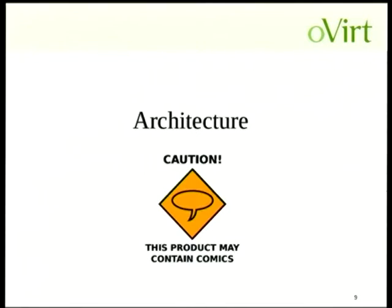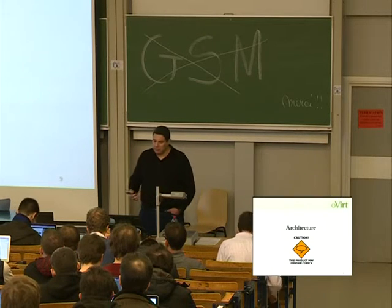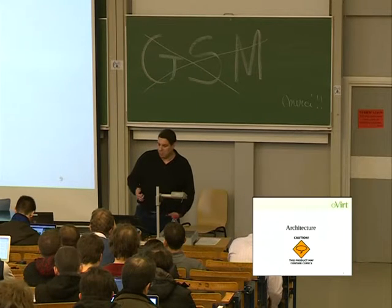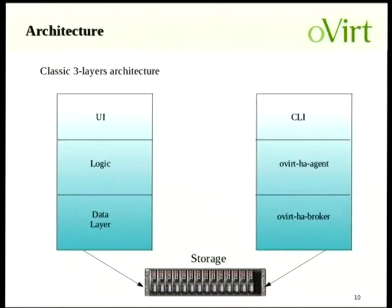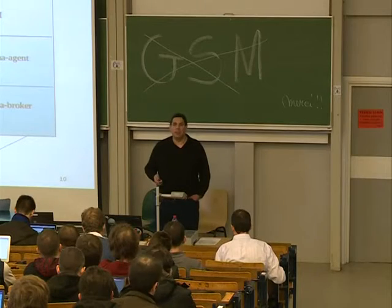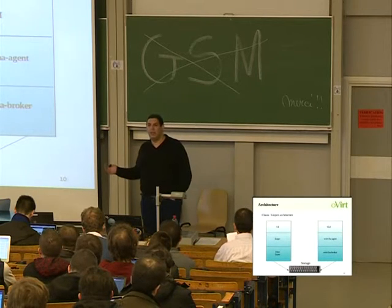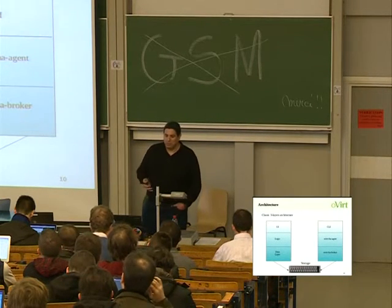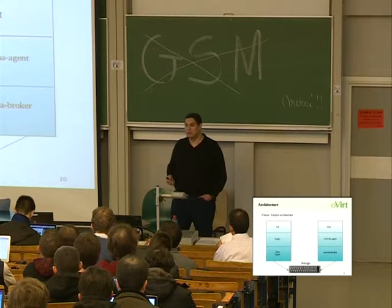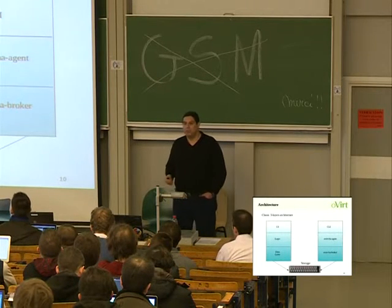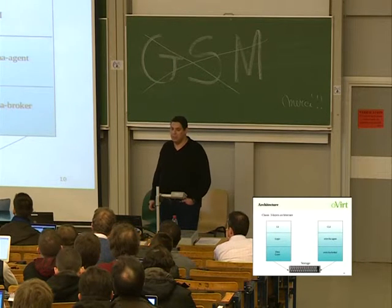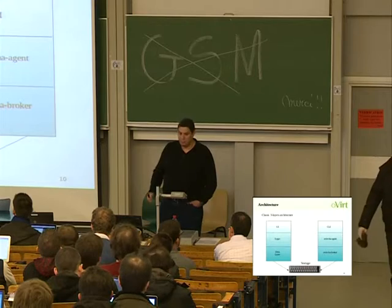With this concept in mind, we decided to start looking at the architecture. We had several discussions — at one point the architecture was too complicated, so we decided to simplify things and go for a standard three-layered classic architecture. In every layer, you will have the UI, the business logic, and the data layer. In our case, we have the CLI, we have the oVirt HA agent, and we have the oVirt HA broker. The broker is basically connecting us to the shared storage. Very simple architecture.